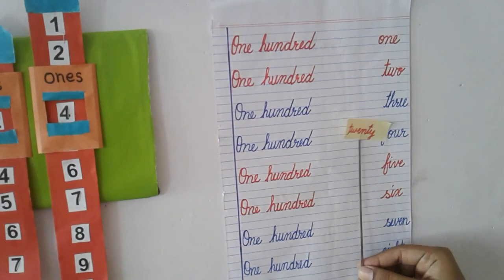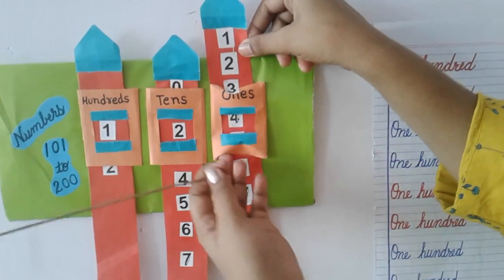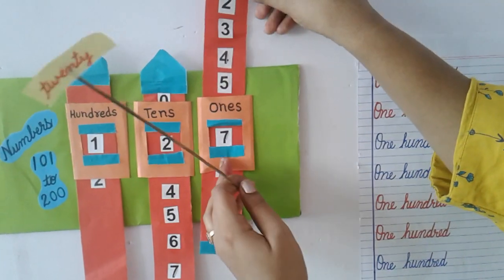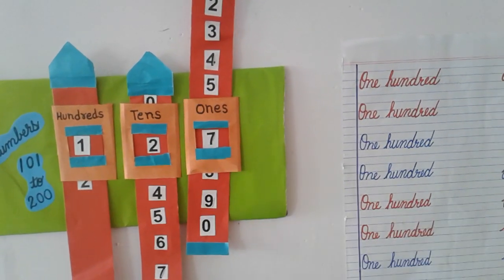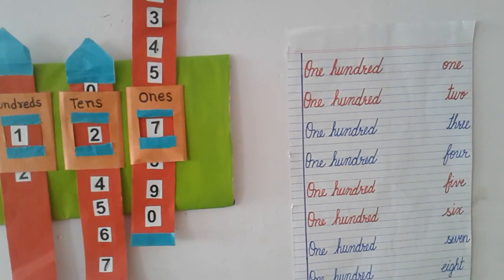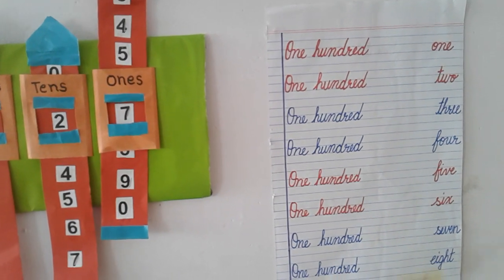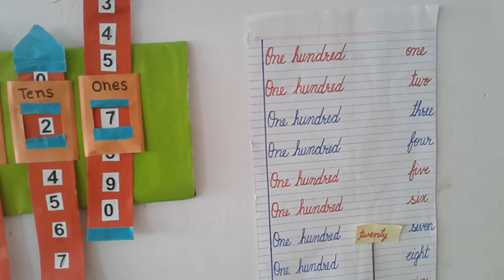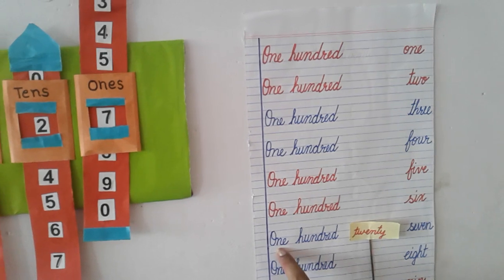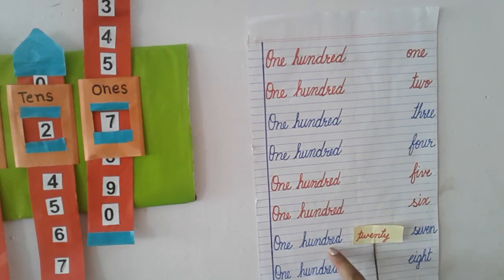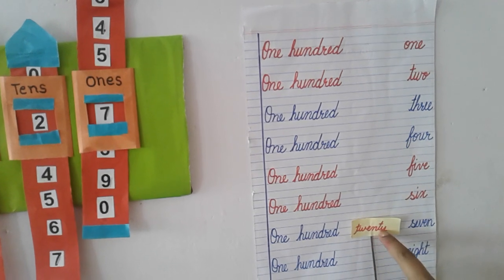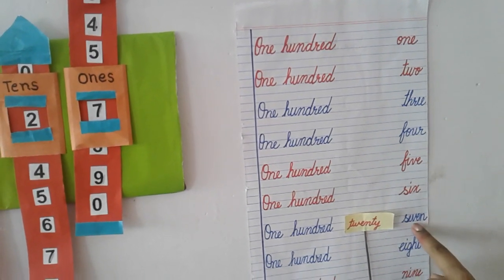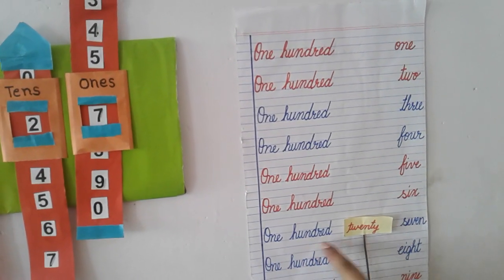Same way. Again I am going to show you another question. Now write the answer for 127. So here is the answer: ONE HUNDRED TWENTY SEVEN.